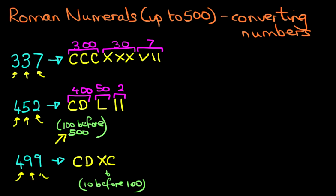And lastly, we do the units, which is 9. How do we write 9? It is I, X. So therefore, 499 is written in Roman numerals as C, D, X, C, I, X. Brilliant.